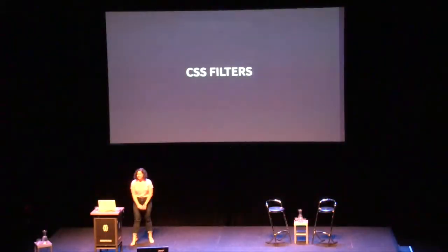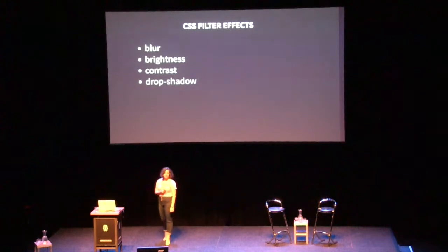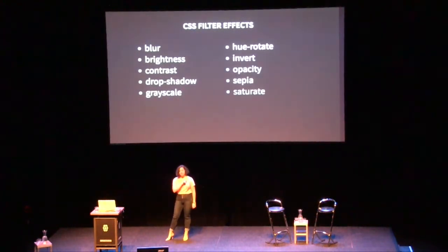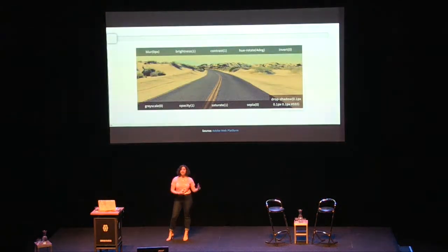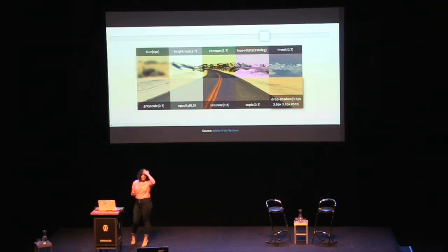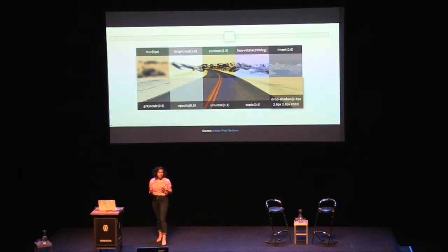CSS filters. The filters provided are blur, brightness, contrast, drop shadow, grayscale, hue rotate, invert, opacity, sepia, and saturate — there are ten of them and they take different values. Most are zero to one inclusive, but things like brightness and saturation can be above one, giving very intense values. Hue rotate is in degrees, blur is in pixels or ems, and drop shadow is an argument list.